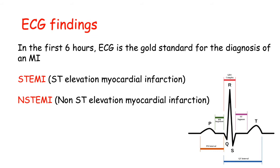While those cardiac enzymes are an important diagnostic criterion, in the first six hours the ECG is the gold standard for the diagnosis of a myocardial infarction. Here we have the normal ECG wave: the P wave, the QRS complex, and the T wave. There are multiple changes to this structure that can be seen in a heart attack.